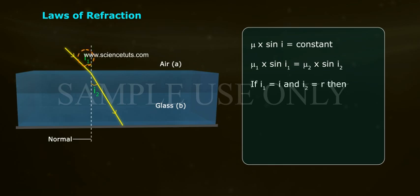If i 1 equals to i and i 2 equals to r, then mu 1 into sine i equals to mu 2 into sine r. Sine i by sine r equals to mu 2 by mu 1.